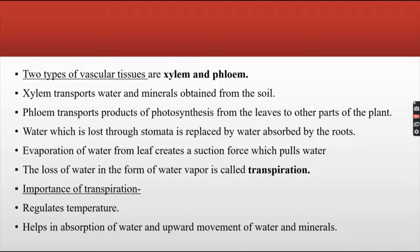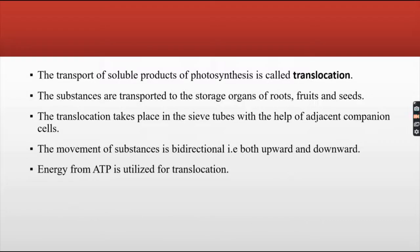The importance of transpiration is that it regulates temperature and helps in absorption of water and the upward movement of water and minerals. The transport of soluble products of photosynthesis is known as translocation. The substances are transported to the storage organs of roots, fruits and seeds. Translocation takes place in the sieve tubes with the help of adjacent companion cells. The movement of substances is bi-directional, that is both upward and downward. Energy from ATP is utilized for translocation.